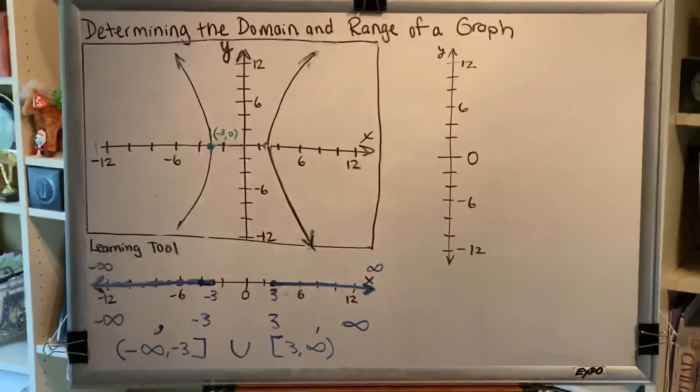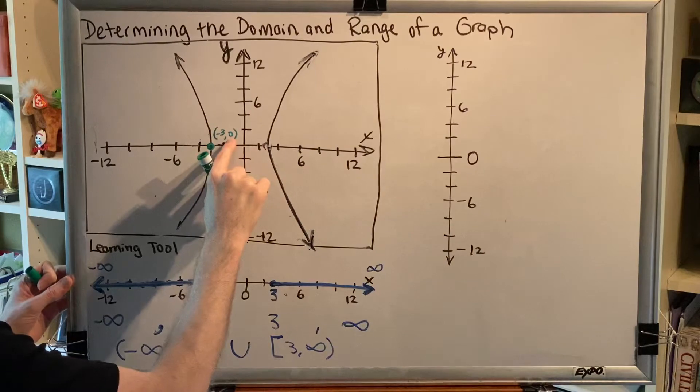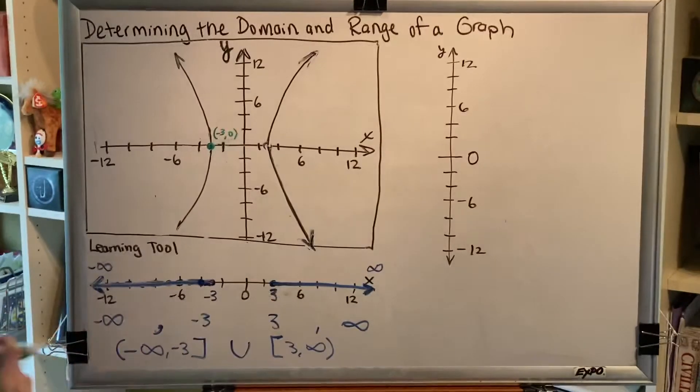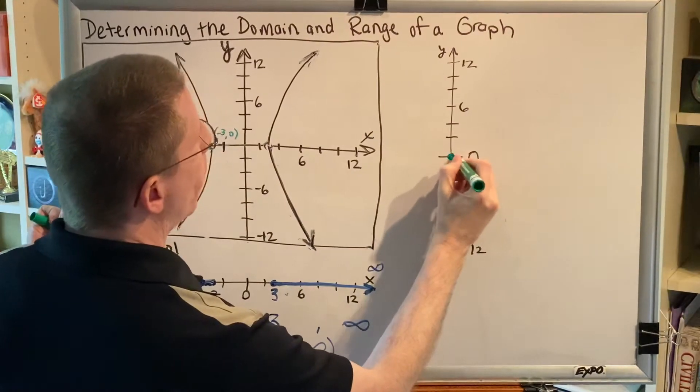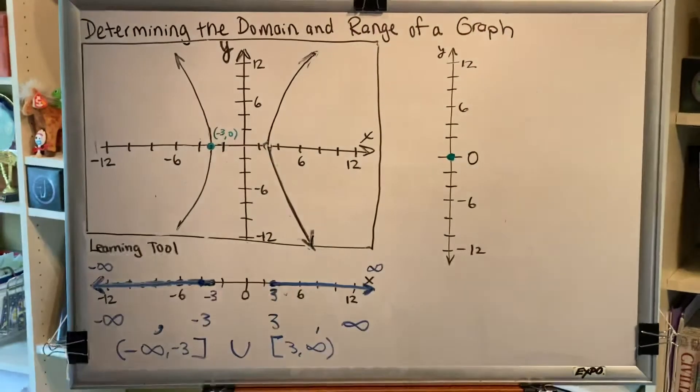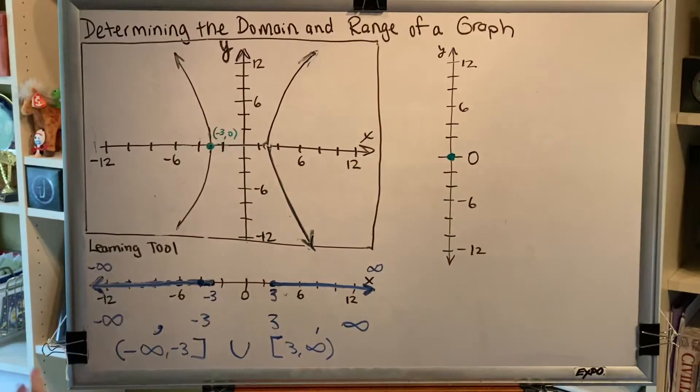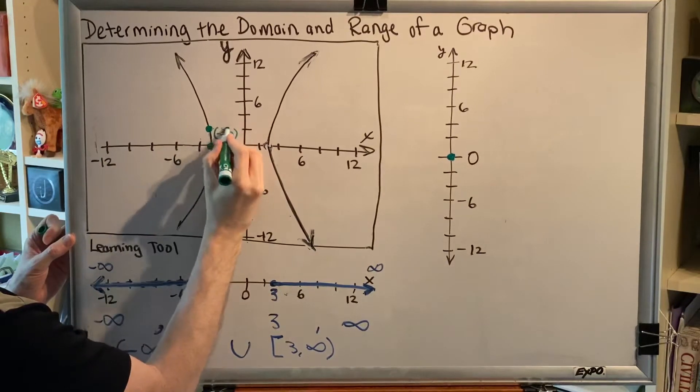Now range is a collection of all of the y-coordinates, which means we don't care about the negative three, all we want is the zero. So zero belongs in our range. I'm going to plot a little dot at zero on my learning and teaching tool over here to the side. This is the way I'm going to keep track of all of the y-values that I get.